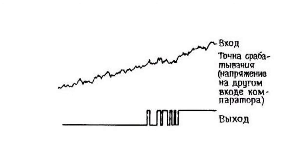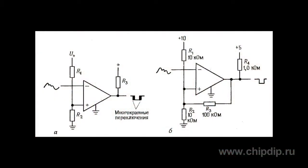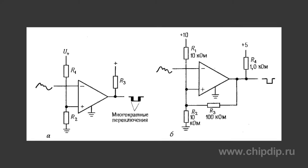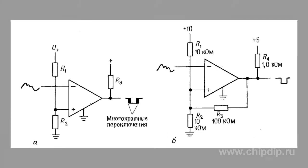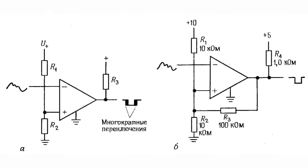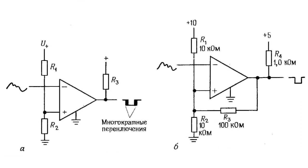Both drawbacks can be eliminated through the use of positive feedback. R3 resistor creates two trigger thresholds in the circuit, depending on the output status. For the example given, the lower threshold is defined at 4.76V, provided that output voltage is equal to ground potential — a high input level. When output voltage equals plus 5V, the threshold is defined at 5V.